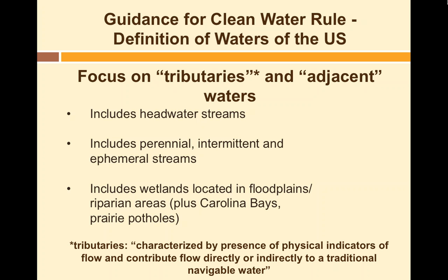This provides a segue to the Clean Water Act guidance on navigable waters. The new rules focused on what are tributaries and what are adjacent waters, and emphasized that the Clean Water Act now applies to headwater streams — the first and second-order streams. It also includes perennial, intermittent, and ephemeral streams — those that don't always have flow but have indicators like a clearly defined channel and bank — as well as some other types of wetlands, those located in floodplains, and large areas like the prairie potholes.